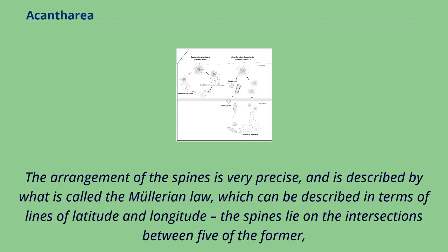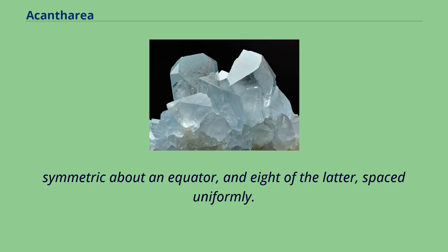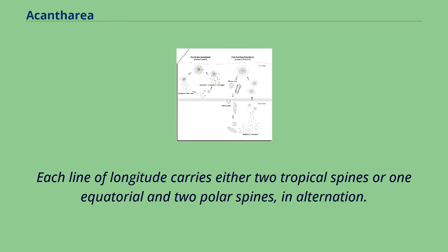The arrangement of the spines is very precise, and is described by what is called the Müllerian law, which can be described in terms of lines of latitude and longitude. The spines lie on the intersections between five lines of latitude, symmetric about an equator, and eight lines of longitude, spaced uniformly. Each line of longitude carries either two tropical spines or one equatorial and two polar spines, in alternation.